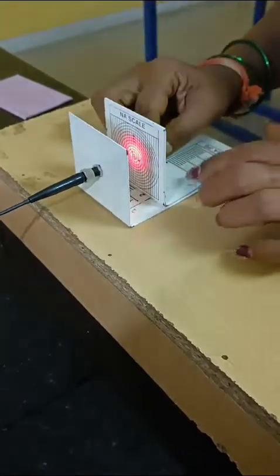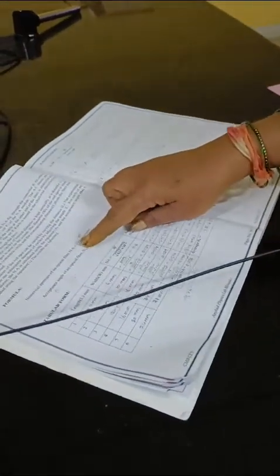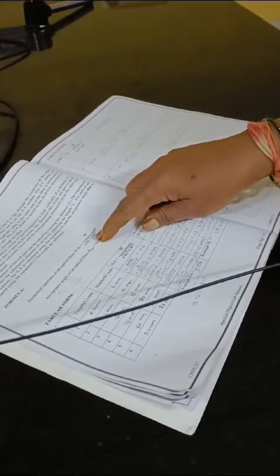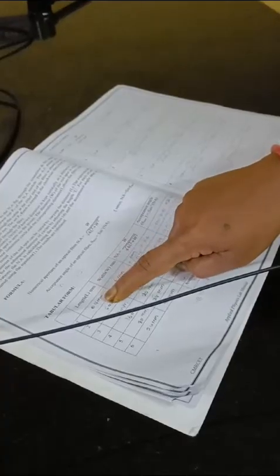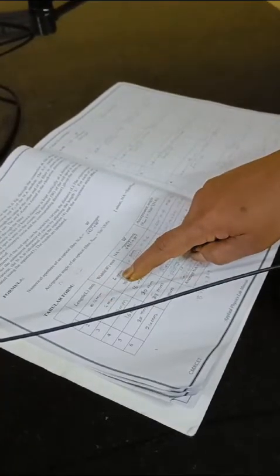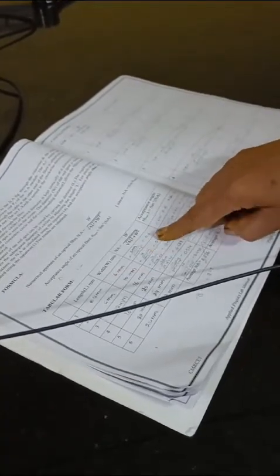Once you note the values, calculate the numerical aperture using the formula: W divided by the square root of 4L² plus W². For example, if L equals 4mm and the width of the light spot is 6mm, substitute these values to get the numerical aperture. Repeat this for all readings.